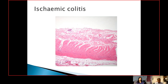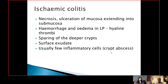Here you can see complete necrosis up to the submucosa — this is the layer of muscularis propria — and in this area you can see a bit of infarction as well. The features to remember are necrosis, ulceration of the mucosa extending into the submucosa, and hemorrhage and edema in the lamina propria. If you're lucky, you can see hyaline thrombi in the small vessels. There would be sparing of the deeper crypts, surface exudate will be present, and usually very few inflammatory cells including crypt abscesses are seen.